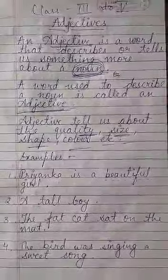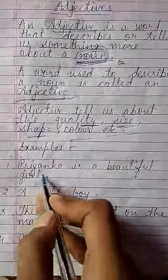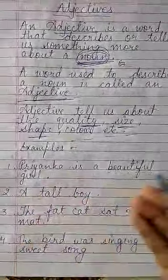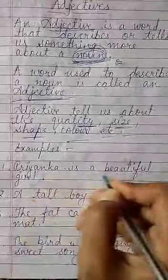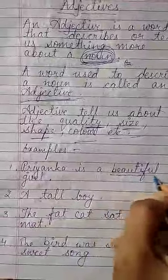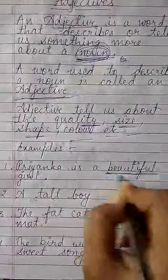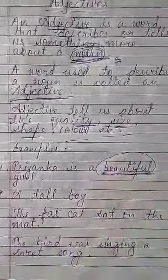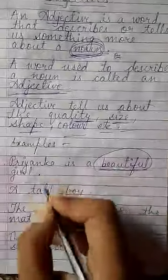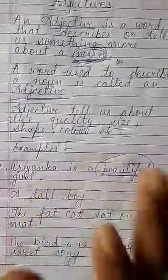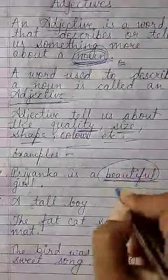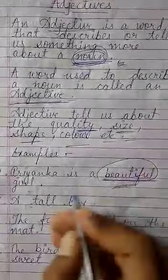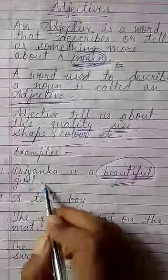Now let's come to the examples. Here is the first example: Priyanka is a beautiful girl. So what is her quality? Priyanka is a girl, but Priyanka is a beautiful girl — so 'beautiful' describes her quality.